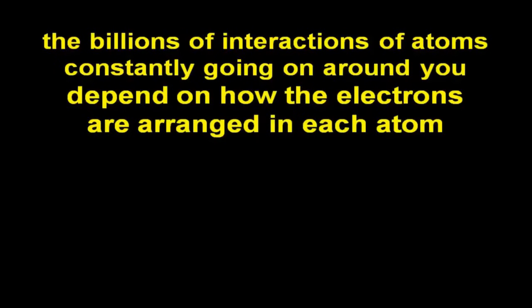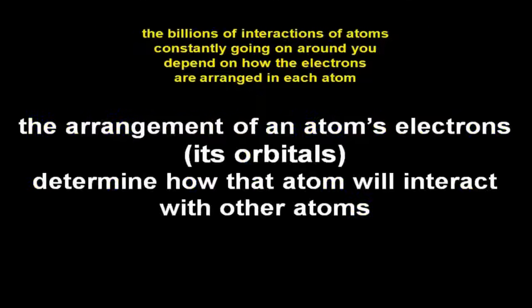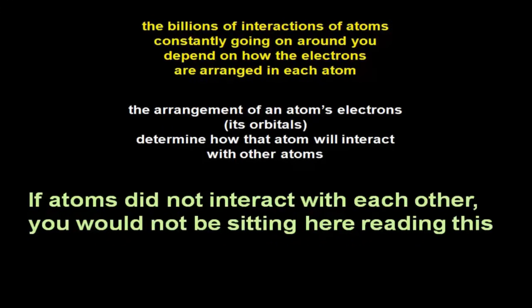Why do we care about how electrons are arranged in atoms? Atoms are constantly interacting around you — on Earth, in the solar system, in the universe. Those interactions depend on how electrons are arranged in each atom. That arrangement, its orbitals, determines how atoms interact with other atoms. If atoms did not interact with each other, you probably wouldn't be sitting here reading this.